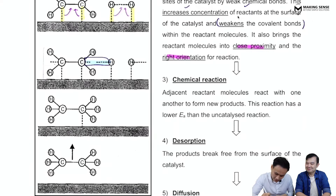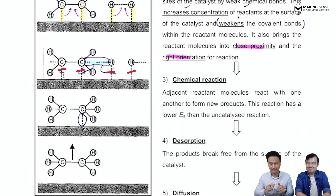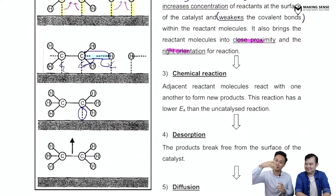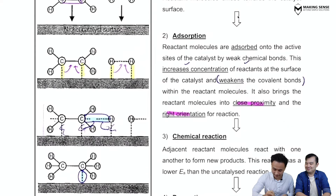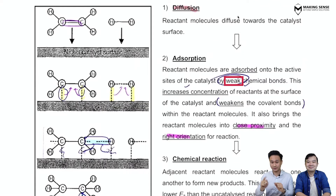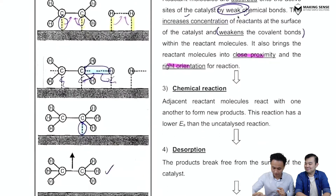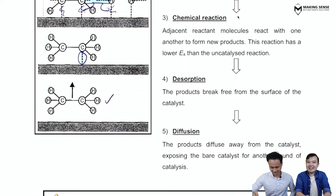When bonds form between the reactant particles, energy is released. The remaining bonds break, and the product is formed. The product then has to be desorbed off the surface — it breaks its bond with the catalyst and is released. An important condition: the bonds formed at the start between the reactant and catalyst must be weak, otherwise the product cannot desorb.